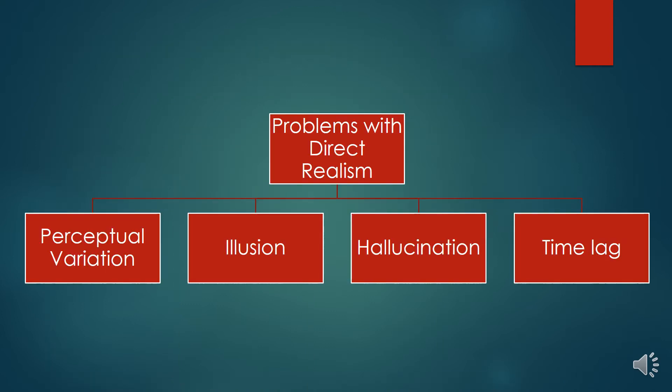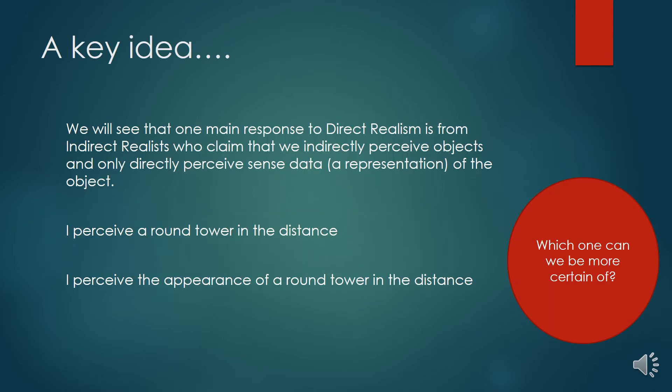The main problems with direct realism that you need to be able to outline are: the problem of perceptual variation, the problem of illusion, hallucination, and the time lag argument. We'll whiz through these — I'm going to outline them for you and try to come up with some kind of response from a direct realist. One key idea we'll explore comes from indirect realists, who say we don't perceive objects directly — we only indirectly perceive them. What we directly perceive is some form of representation of an object to our minds, and we call this sense data.